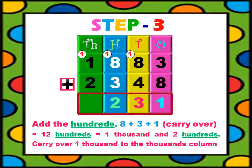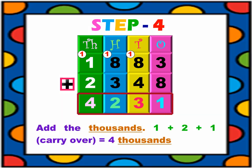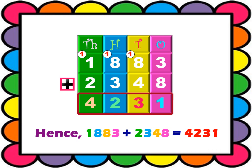Step 3: Add the hundreds. 8 hundreds plus 3 hundreds equals 11 hundreds, plus the 1 we carried over from the tens column, equals 12 hundreds. That is, 1 thousand and 2 hundreds. We carry over 1000 to the thousands column and 2 hundreds stay in the hundreds column. Step 4: Add the thousands. 1 thousand plus 2 thousands equals 3 thousands, plus the 1 carried over from the hundreds place, equals 4 thousands. Hence, when we add 1883 and 2348, the sum is 4231.